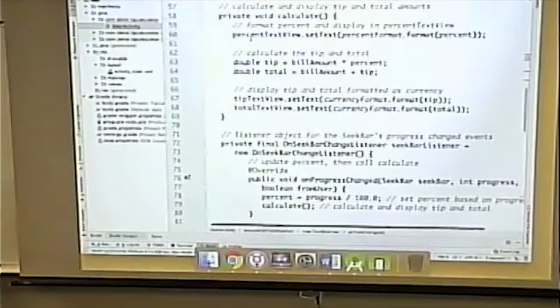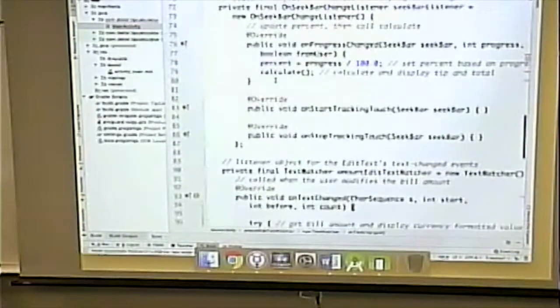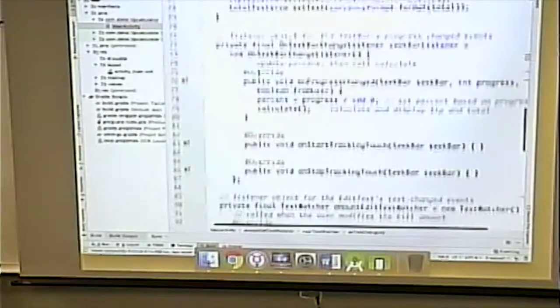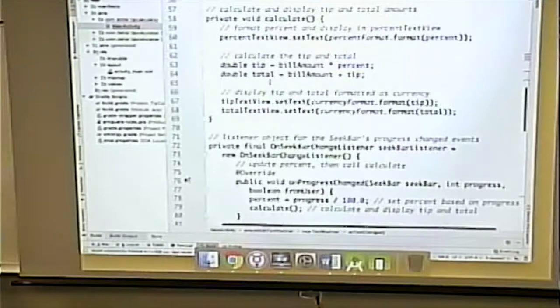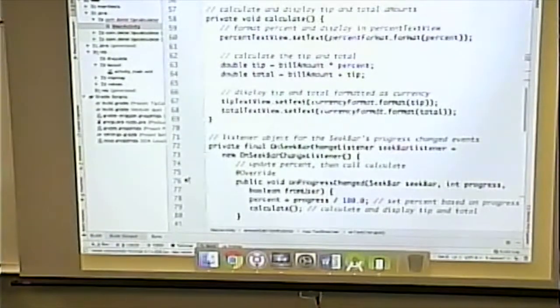So that's the percentage text. I don't know why they don't have that here in the seek bar change. If I was coding it, I would do it there, but eh, who cares? They do the calculation. They display the results. Questions about this?